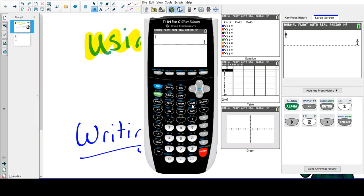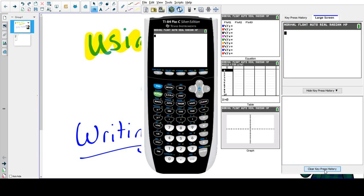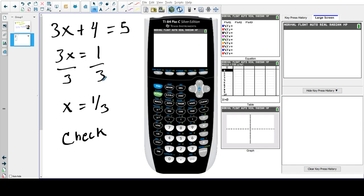Let's do this in an example. I'm going to clear this. Let's say you're taking a test and you solve this problem: 3x + 4 = 5. We solve and get x = 1/3.